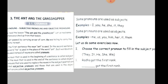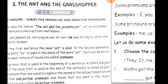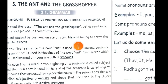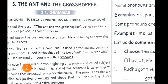Now we will read ahead about subjective pronoun and objective pronoun. We read the lesson The Ant and the Grasshopper. Let's read some sentences picked up from the lesson: 'An ant passed by carrying an ear of corn. He was toiling to carry the corn to its nest.' Here the word 'he' is used for the ant. We are not saying 'the ant was toiling,' we are saying 'he was.' He stands for the ant.